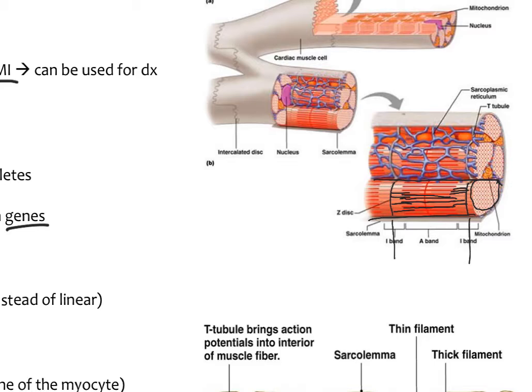With contraction, the actin and the myosin join together and slide past each other, shortening the sarcomere and resulting in muscle contraction. In the myocyte there is also the sarcoplasmic reticulum, a variant of the endoplasmic reticulum that stores calcium — the important ion needed to initiate muscle contraction. There are also little indentations from the surface called T-tubules that allow electrolytes from outside the cardiac muscle cell to enter into the cell.